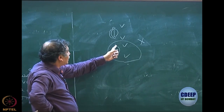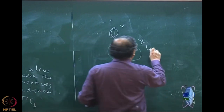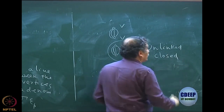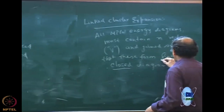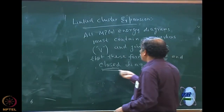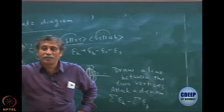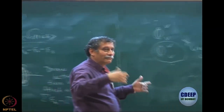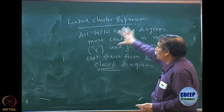If I want to draw an MP4 diagram, such a diagram I cannot draw. There must be at least one line connecting both parts. This is an unlinked diagram — unlinked but closed. The linked cluster expansion theorem, first proved by Goldstone, states that diagrams must contain n vertices joined such that they form linked and closed energy diagrams. Then apply the rules: minus 1 to the power h plus l, 1 over 2 to the power number of loops, equivalent lines — all that you apply after drawing the diagram.